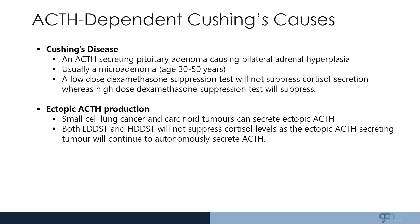Ectopic ACTH production, either from a small cell cancer or a carcinoid tumour, secretes very high levels of ACTH. Consequently, both the low dose and the high dose dexamethasone suppression tests will not suppress the cortisol levels, and this helps localise whether the disease is ACTH dependent from the pituitary or from an ectopic source.